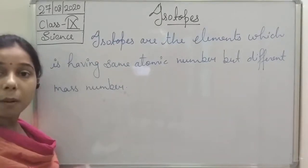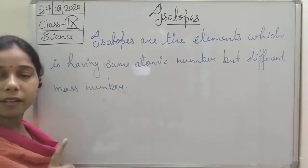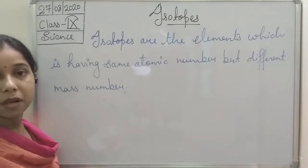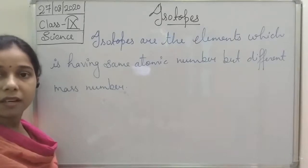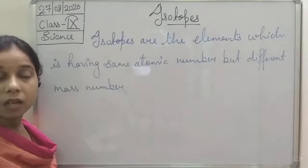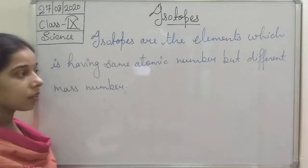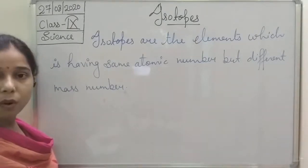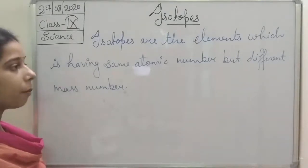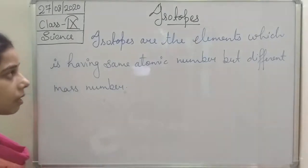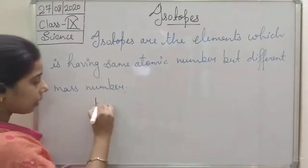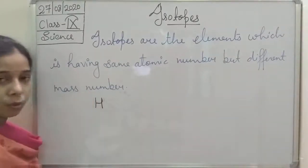Isotopes have the same atomic number but different mass number. It means the number of electrons and protons is the same, but it varies in the number of neutrons. We discussed an example also. Let me write the example and then we will understand it properly, and that is hydrogen.